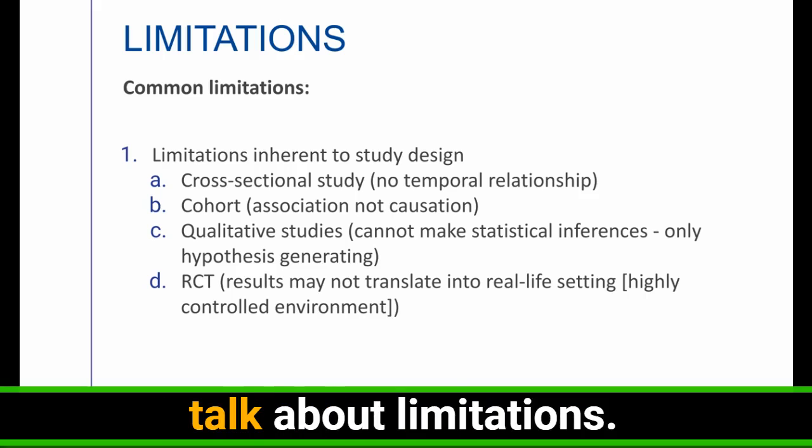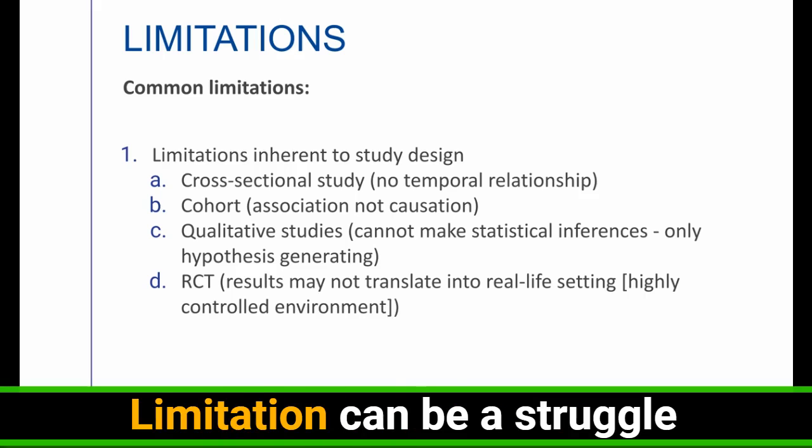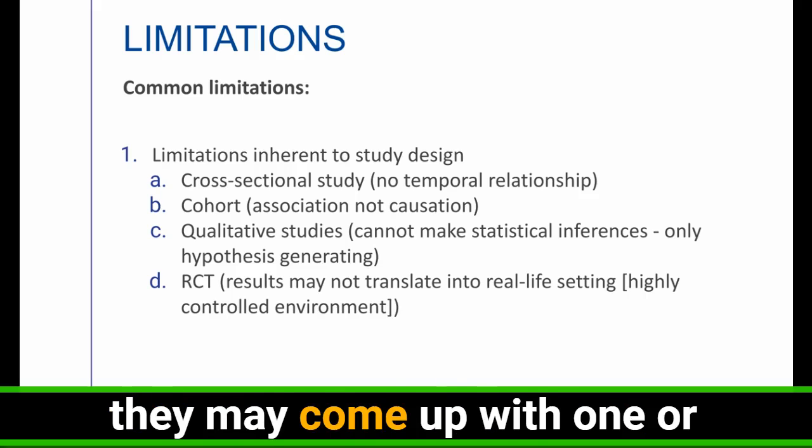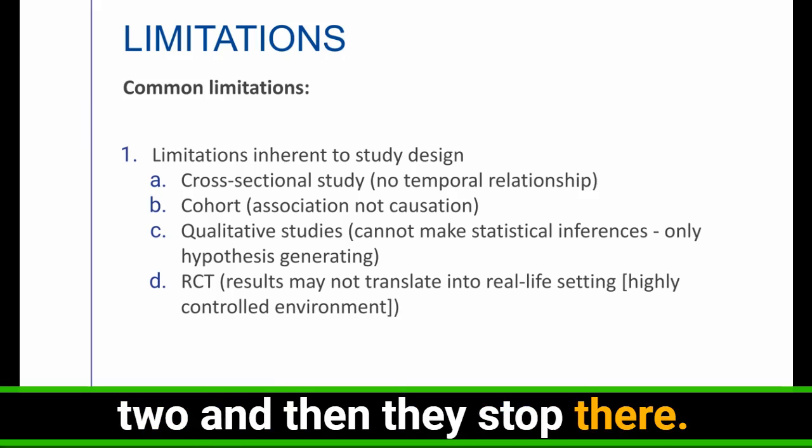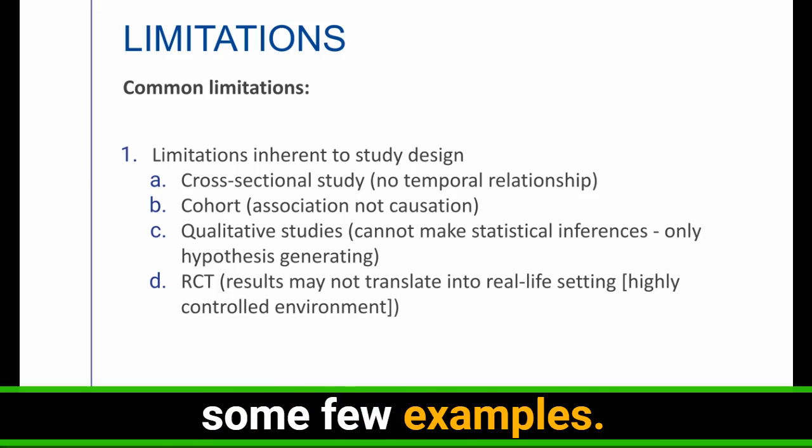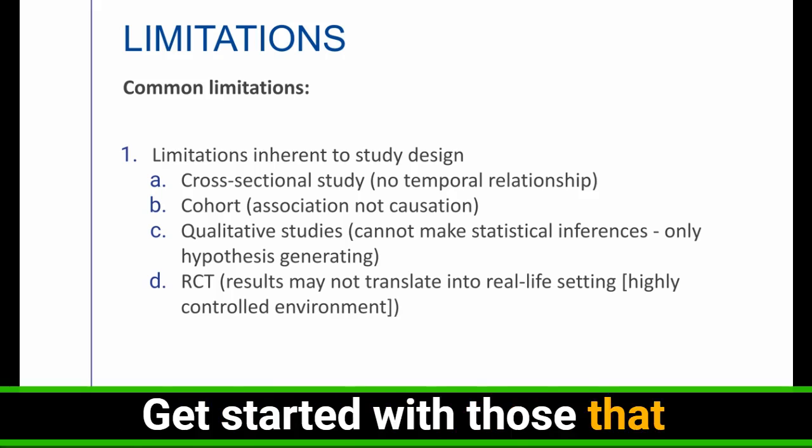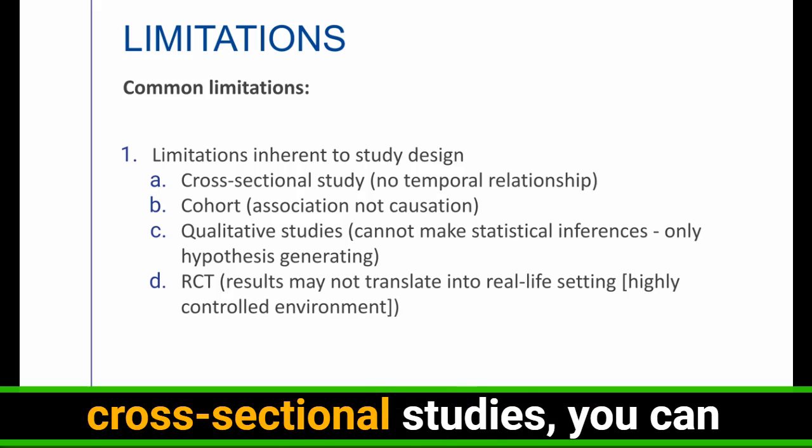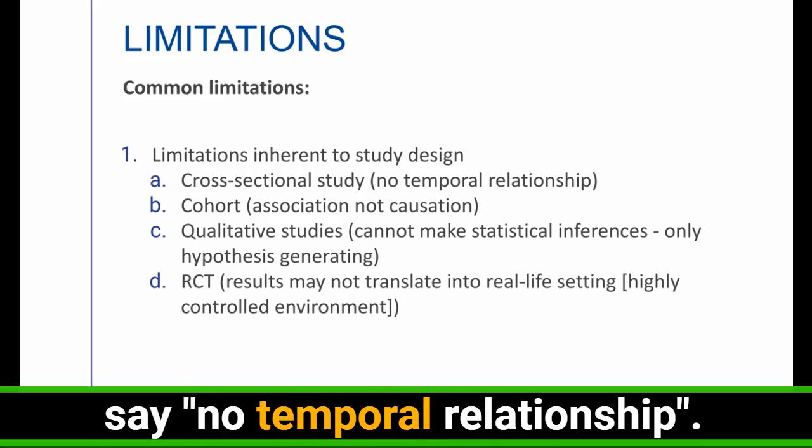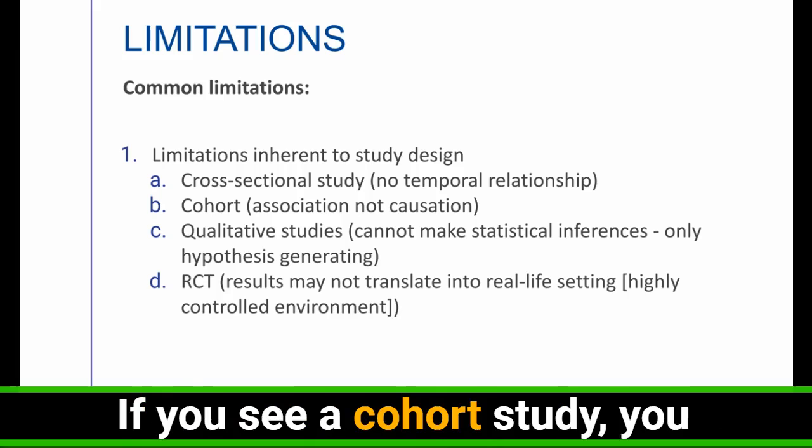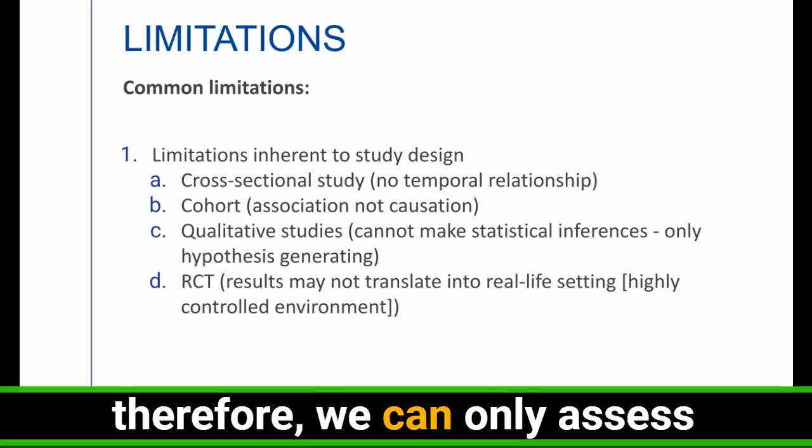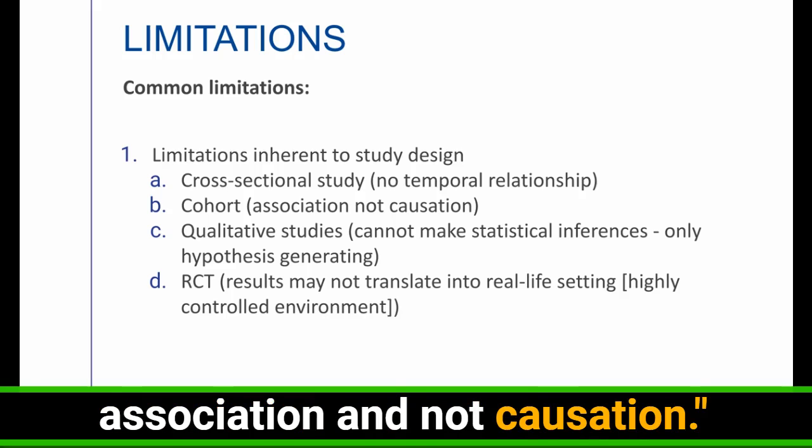Now, the final part, I want to talk about limitations. Limitation can be a struggle for some people because they maybe come up with one or two and then they stop there. So let me give you some examples. Get started with those that are inherent to study design. For example, if you see cross-sectional studies, you can say no temporal relationship. If it's a cohort study, you can say it's a cohort study. Therefore, we can only assess association and not causation.